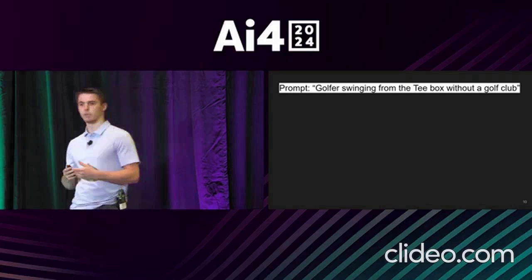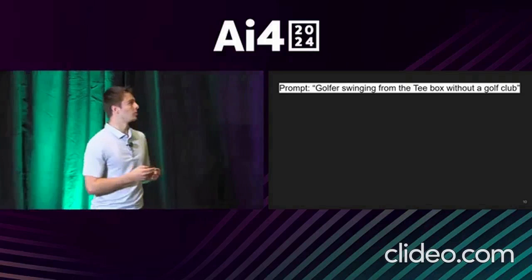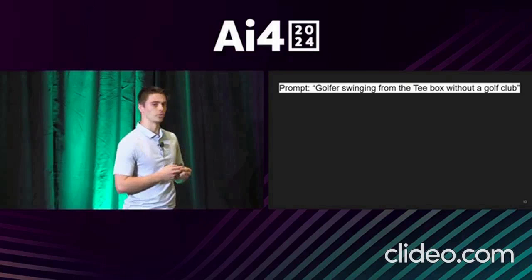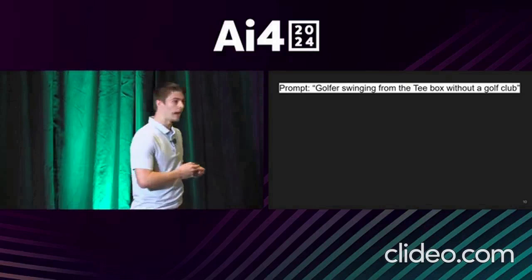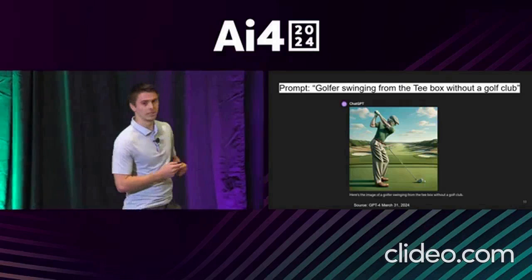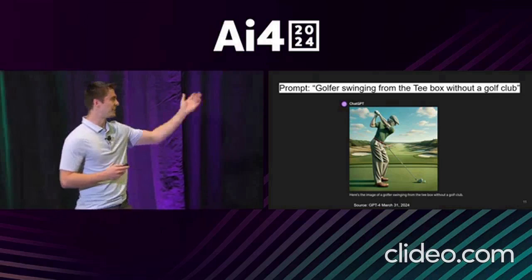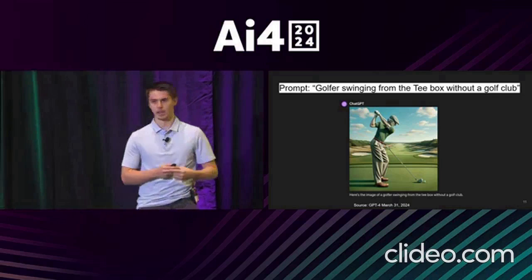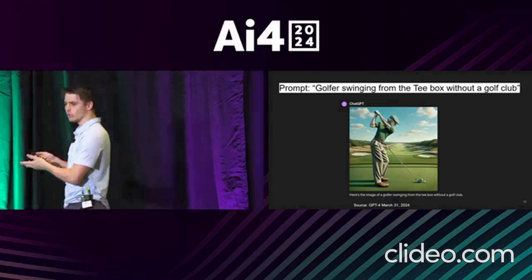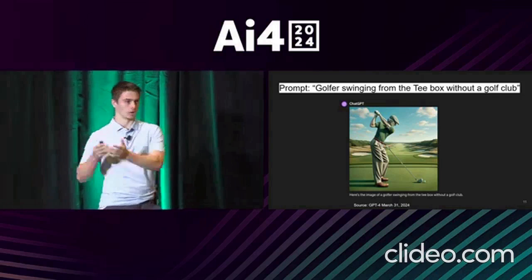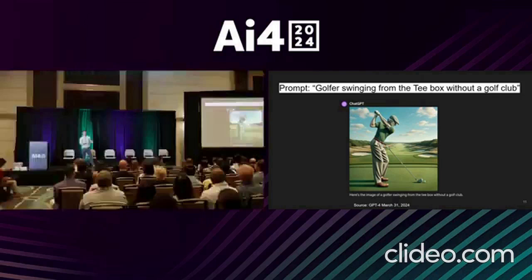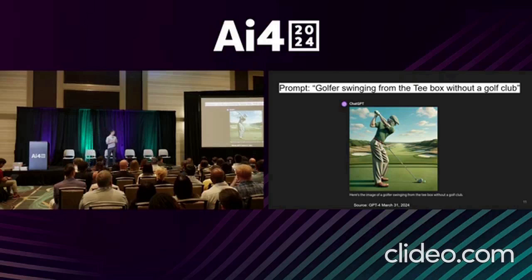It's easy for us humans to imagine a golfer swinging from the tee box without a golf club, but not for the AI. If you ask ChatGPT to create an image for this prompt, you get this extra floating golf club. The problem is that AI learns off of correlations — golfers and golf clubs are highly correlated, they often show up together in the tee box, and so the AI is picking up on this correlation and getting the wrong answer.